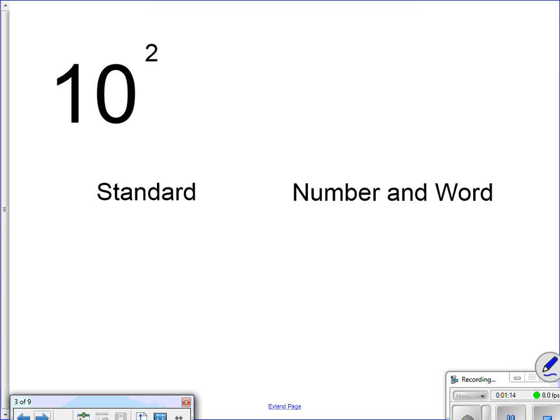10 to the 2nd power, standard notation, which means I would have a 1 here. How many zeros do I have? I have 2 zeros. Number word notation, my number is 1, my word is 100.